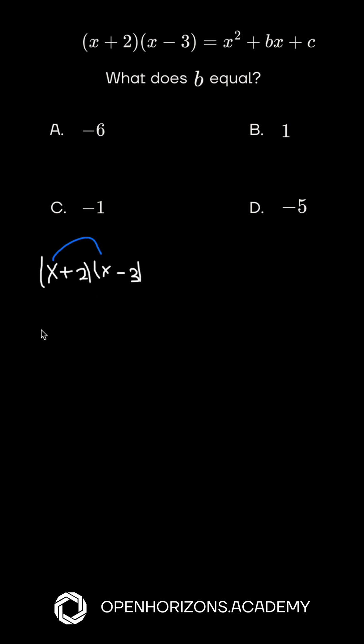Let's multiply x times x, which is going to lead us with x squared. Then x times negative 3, which leads us with negative 3x.